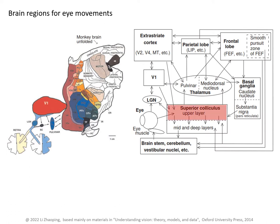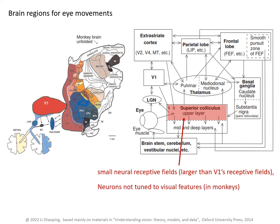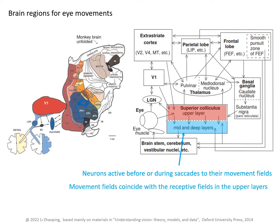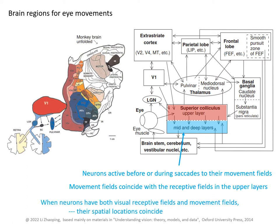The upper layers of the superior colliculus have a retinotopic map of the visual field, and the neurons there prefer small visual stimuli, although their receptive fields are larger than those of V1 neurons. In monkeys, these neurons are insensitive to visual differences in shape, orientation, color, and motion direction. In the deeper layers, neurons are active before and during saccades towards visual field regions called the movement fields of the neurons, and these movement fields coincide with the visual receptive fields of the corresponding neurons in the upper layers. So the two layers correspond roughly to sensory and motor respectively.